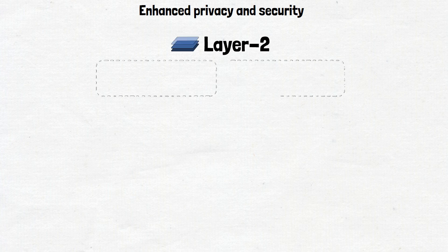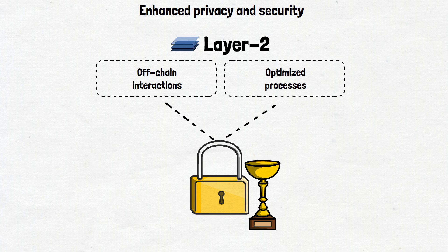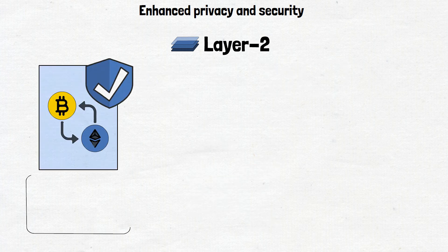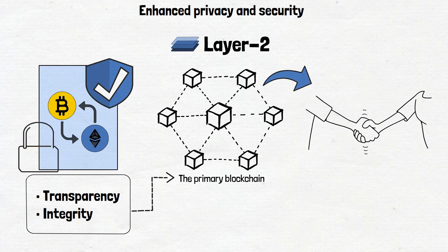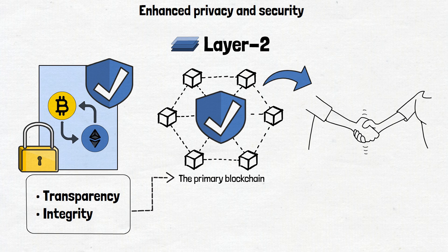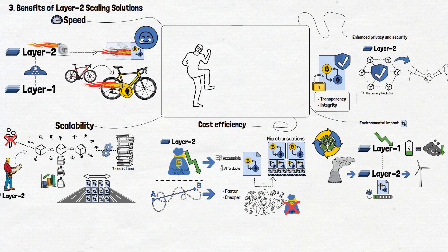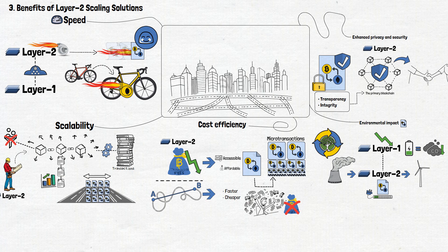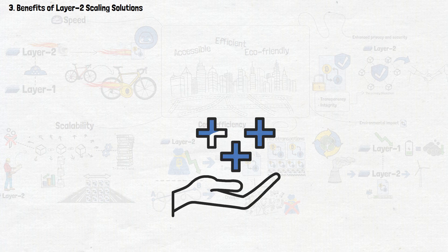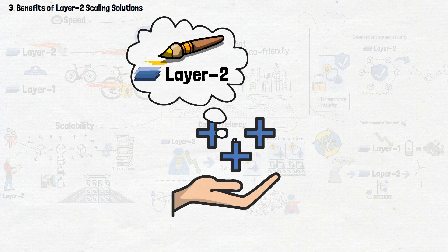And let's not forget about enhanced privacy and security. Layer 2 solutions, through their off-chain interactions and optimized processes, often provide better privacy measures. They ensure secure transactions without compromising on the transparency and integrity of the primary blockchain. It's like having a secret handshake. Transactions are private, yet the blockchain security remains intact. These benefits not only elevate the user experience, but also pave the way for a broader adoption of cryptocurrencies in various domains. It's like upgrading the entire infrastructure of the crypto city, making it more accessible, efficient and eco-friendly. Understanding these advantages paints a vivid picture of the transformative impact of Layer 2 solutions.